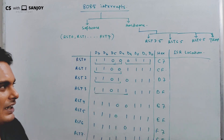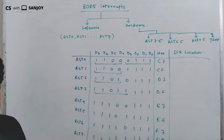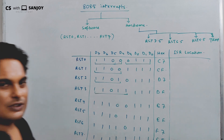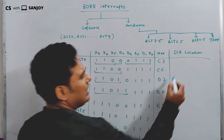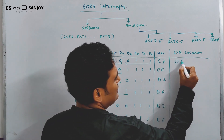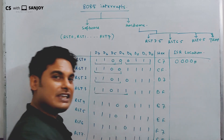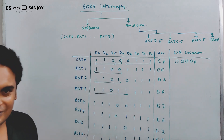Now for the ISR starting locations. The ISR starting location for RST0 is 0000H. H means hexadecimal.